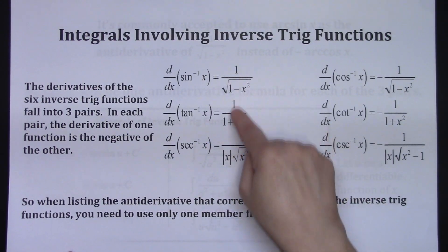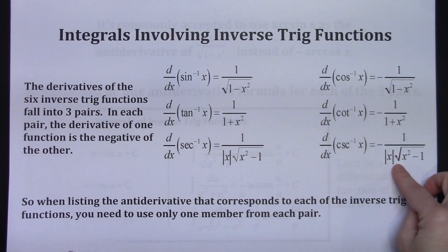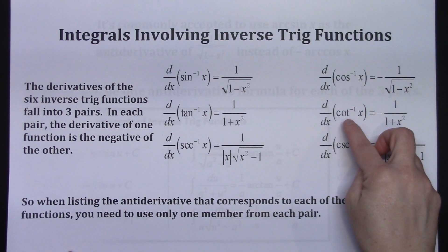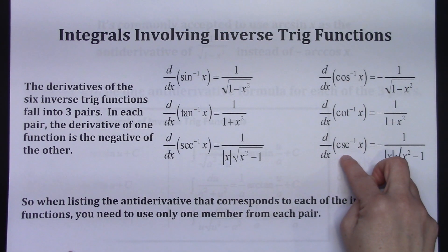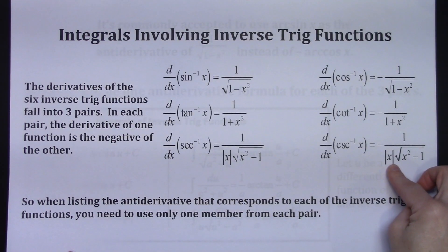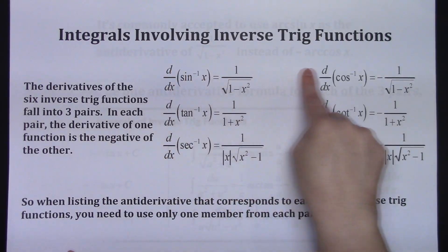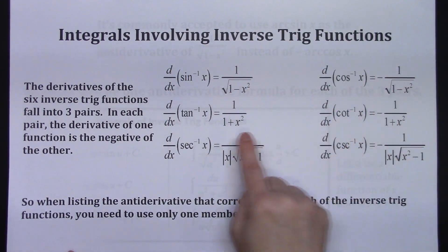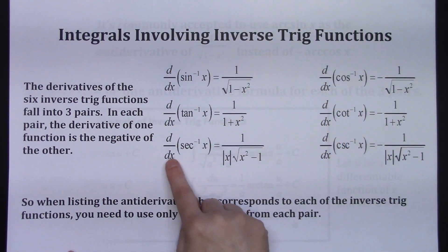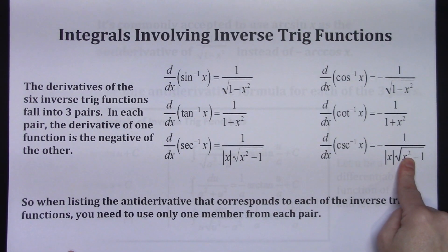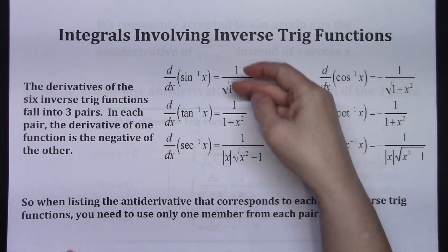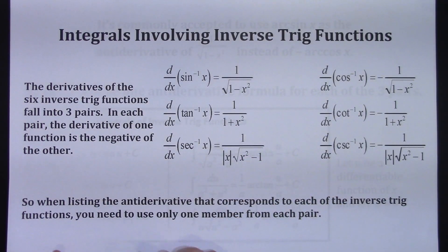...are just the positive versions of your inverse cosine, inverse cotangent, and inverse cosecant. These are just the negatives, these are the positive ones. So really they fall in pairs - one positive one negative, one positive one negative, and one positive one negative. So it's for that reason that we're only going to focus on one member of each one of these pairs and we're going to focus on the positive ones.